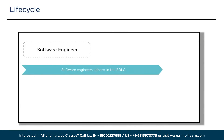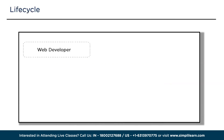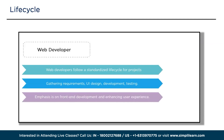Software engineers follow the software development life cycle (SDLC), which includes stages such as requirement gathering, design, development, testing, deployment, and maintenance — involved throughout the entire lifecycle to ensure the software meets specified requirements. Web developers follow a similar lifecycle: gathering requirements, designing the user interface, developing the website or application, conducting testing, deploying, and providing ongoing maintenance — with a primary focus on front-end development and user experience.